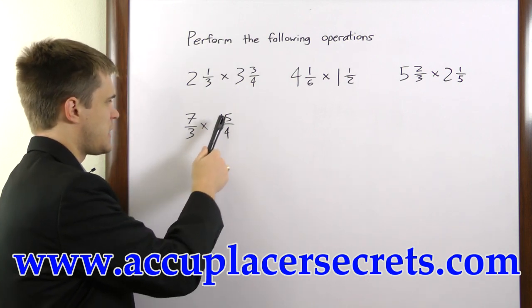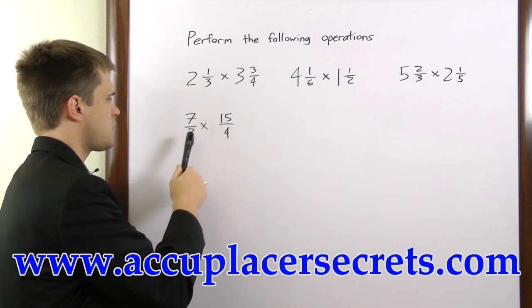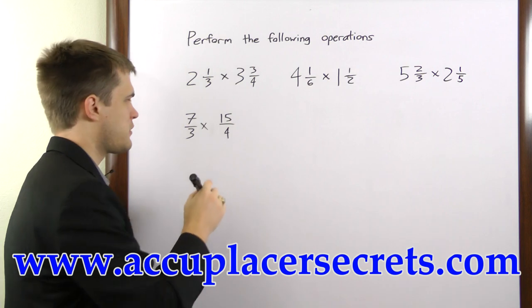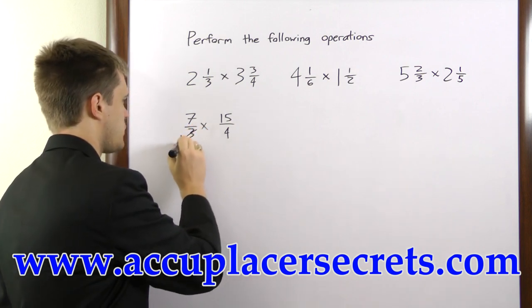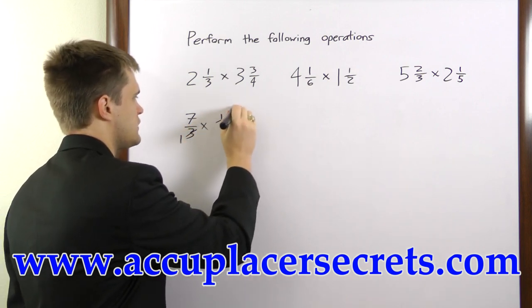Now, if you look at these two, you see that we can cancel the 15 and the 3. If we divide both numbers by 3, 3 over 3 is 1, 15 over 3 is 5.